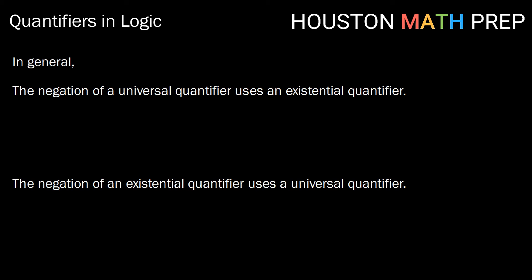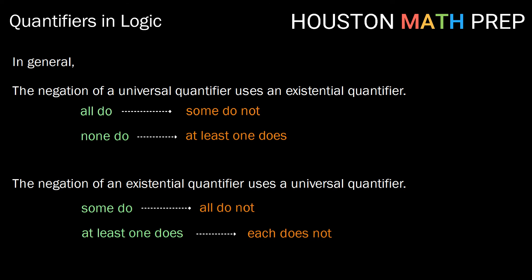In general, as we just saw, the negation of a universal quantifier uses an existential quantifier, and the negation of an existential quantifier uses a universal quantifier. So we can keep in mind that all do has the negation of some do not. The negation of none do is at least one does. If we take the statement some do, the negation of that would be all do not. And if we take the negation of at least one does, we can say each does not.